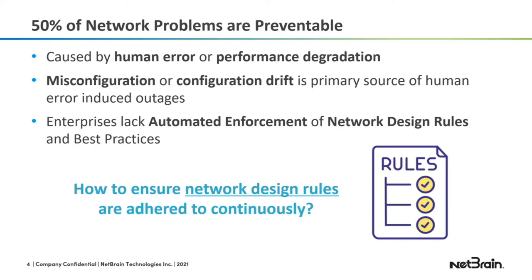Enterprises unfortunately lack automated enforcement of network design rules and best practices. For example, if you have a network-wide QoS policy for voice and video traffic, or edge router access lists for traffic separation — how do we as network engineers ensure that network design rules are adhered to continuously?